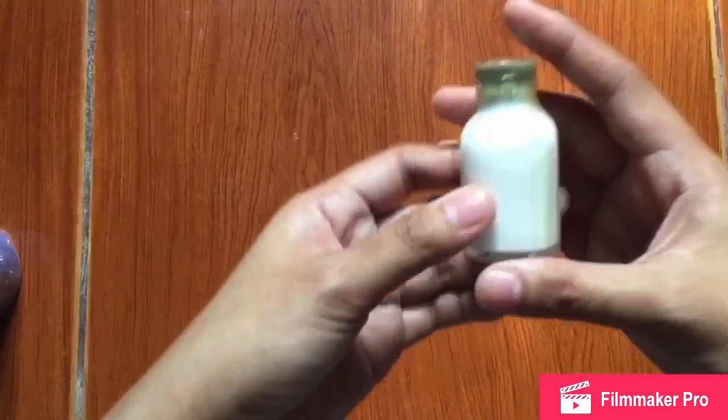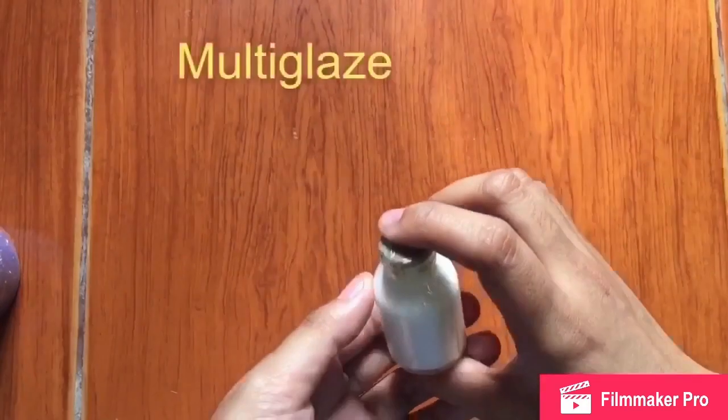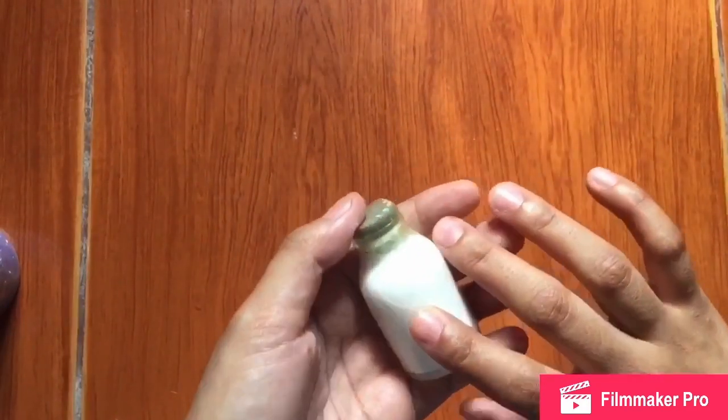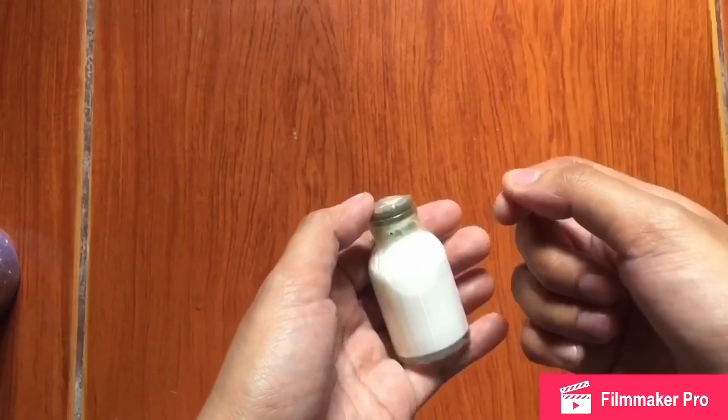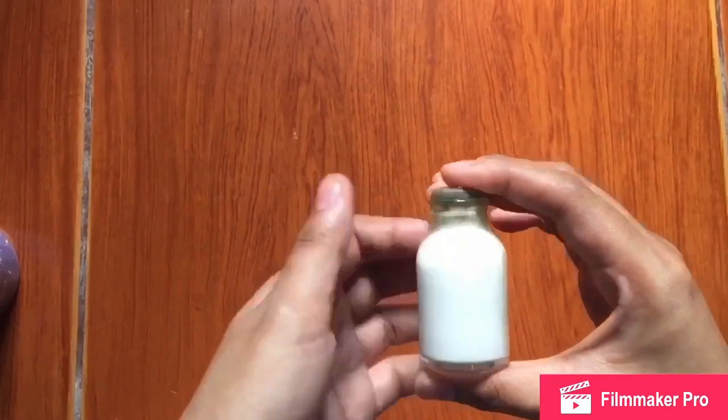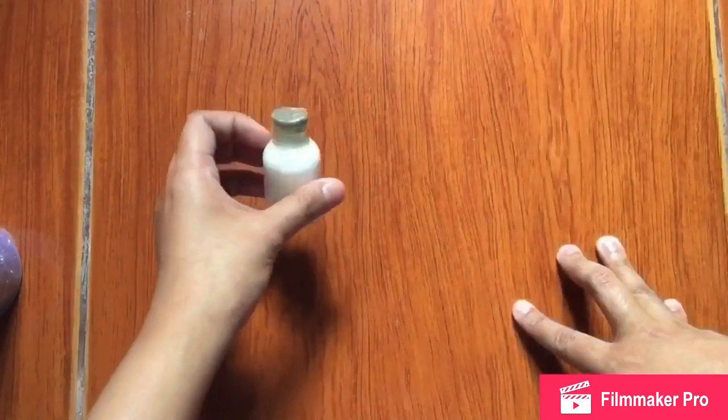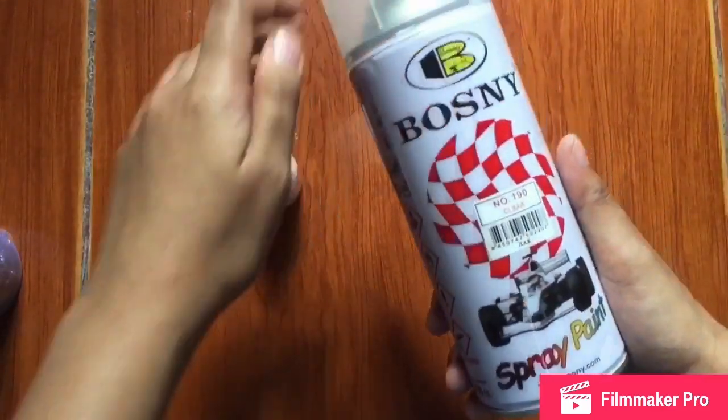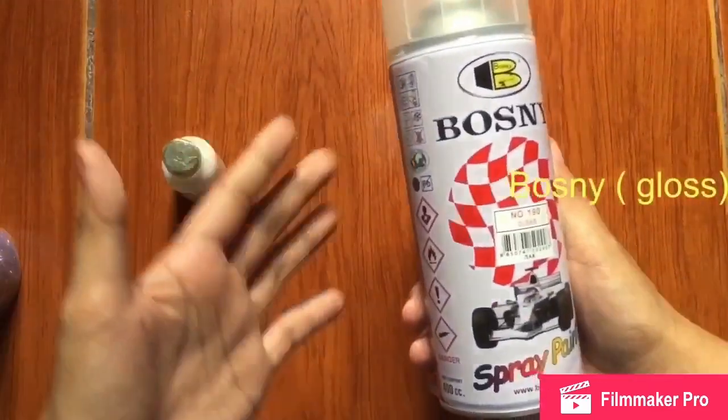And of course I do have here some gloss. Okay, this is a multi-glaze. It's actually locally produced. So I use this with a brush and then I just apply it on the air dry clay project once it has been fully air dry.